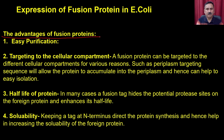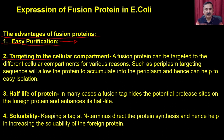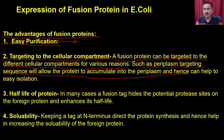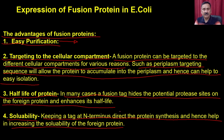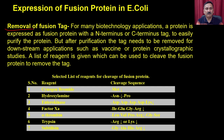The advantages of fusion proteins include easy single-step affinity purification. Sometimes tags are placed so that you can target a protein into a particular compartment — for example, periplasm targeting sequences allow the protein to accumulate into the periplasm and help in easy isolation. Fusion tags can also modulate the half-life of the protein, as the tag hides potential protease sites on the foreign protein and enhances its half-life. Additionally, keeping the tag at the N-terminus directs protein synthesis and helps increase the solubility of the foreign protein.